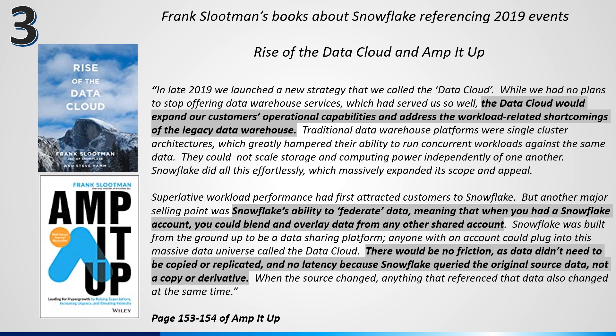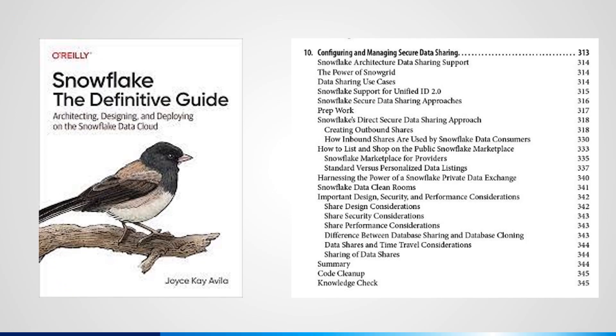If Alan gets credit for coming up with the term data cloud, then without a doubt, Snowflake gets credit for building the first data cloud from the ground up. If you've read Frank Slootman's books about Snowflake, you'll know that Snowflake launched their killer data cloud capabilities in late 2019. Among other things, Snowflake made it possible to scale storage and compute independently and to run concurrent workloads against the same data. One of the huge differentiators of the Snowflake data cloud was its ability to federate data — to make data sharing possible without the need to copy or replicate data. As a side note, when I wrote the Snowflake Definitive Guide released last year, I devoted an entire chapter to Snowflake secure data sharing. It's really that important, and I think we haven't even begun to scratch the surface on the things that are possible with data sharing capabilities.